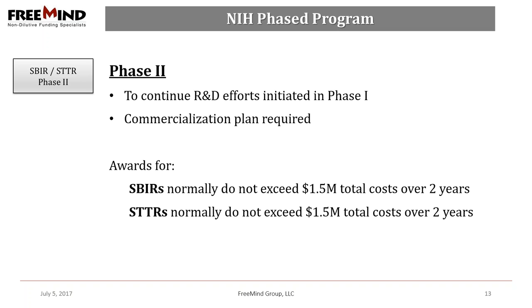The objective of Phase 2 is to continue the R&D efforts initiated in Phase 1. This funding is based on the results achieved in Phase 1 and the scientific merit and commercial potential of the project. Only Phase 1 awardees are eligible for Phase 2 awards. SBIR and STTR Phase 2 awards normally do not exceed $1,000,000 total cost for two years, but Congress will allow awards to exceed these amounts by up to 50%, or up to $1.5 million. Phase 2 SBIR funding from NIH can even go up to $2,000,000.